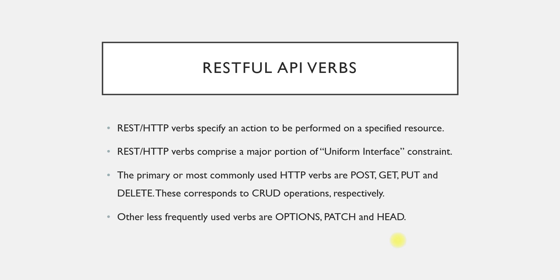For example, suppose you want to operate your TV — your remote is an interface through which you are operating your TV, or through the switch panel on your TV you are trying to interact with it. So basically your switch panel or your remote is an interface. Similarly, if I want to interact with my Web API, I need an interface, and that interface is provided by HTTP verbs or RESTful API verbs.